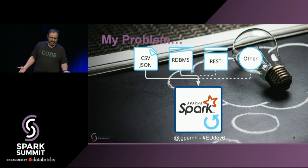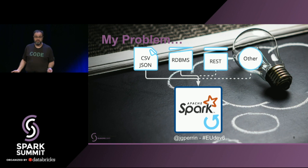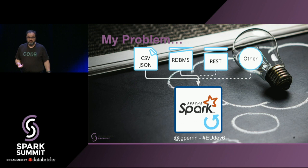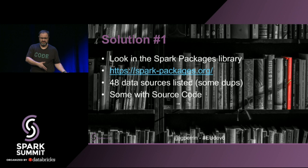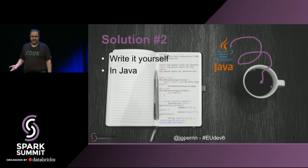My problem was that I know a little bit about Spark. I've been trying to ingest CSV and JSON without any problem. But for a customer of mine, I needed to import REST — I needed REST to come in — and other sources as well. The first reflex you have is to look at sparkpackages.org. There are something like 48 different data sources listed there, some duplicates with what's already in the product, and some with source code. Most of them are in Scala, and I needed Java. So I had no choice — I had to write it myself, in Java.